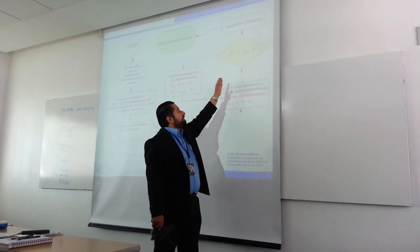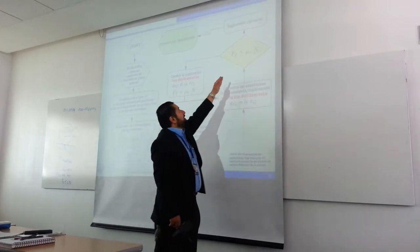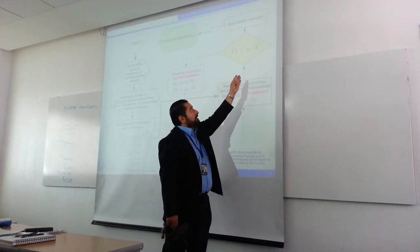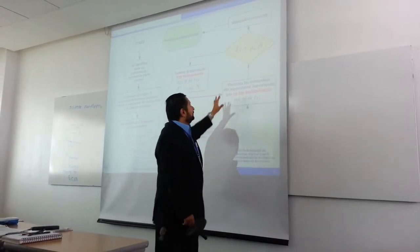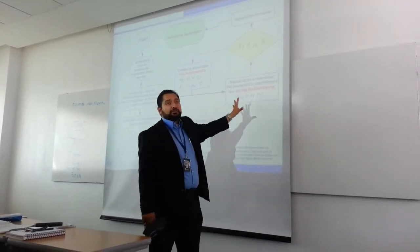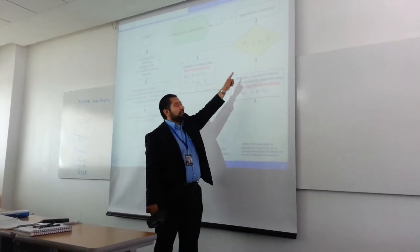The friction force can never be greater than mu S N, the static friction. So you check if the friction that was solved in the equation of motion is lower than mu S N. If that's the case, your assumption is correct, and then you can show the results and the problem is finished.